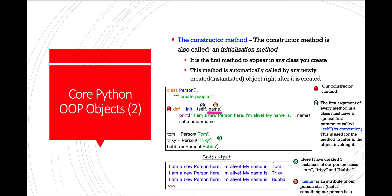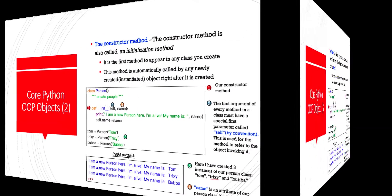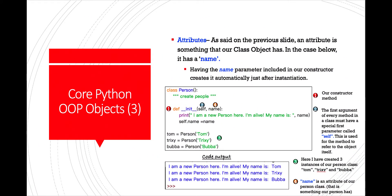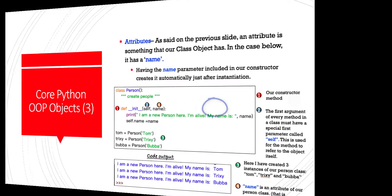Name is an attribute of our Person class — an attribute is something a person has. So in this case, our person has a name. We could define other things that a person has, but in this case we only have one attribute defined so far for our Person class. An attribute is something that our class object has. Having the name parameter included in our constructor creates it automatically just after instantiation.